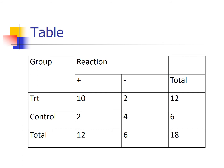Notice both of those tests require the expected cell counts to be five or more. Is that satisfied in this example? The answer is no. A useful trick: we do not have to compute the expected cell count for every cell — only for the cell that's going to have the smallest expected cell count.